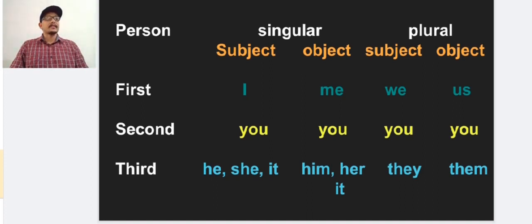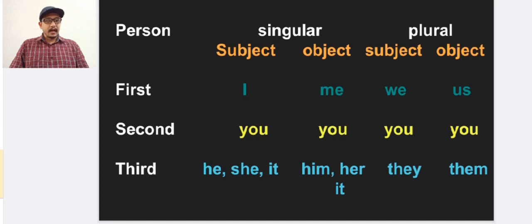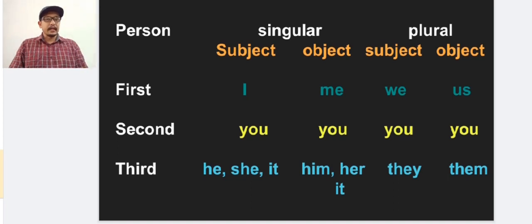Here we are going to study some subject pronouns and object pronouns in personal pronouns. In the first person, singular subject is 'I' and singular object is 'me'; plural subject is 'we' and plural object is 'us'. In the second person, singular subject is 'you', singular object is 'you', plural subject is 'you', and plural object is 'you' — in the second person we use only one word. In the third person, singular subject is 'he', 'she', 'it'; singular object is 'him', 'her', 'it'; plural subject is 'they' and plural object is 'them'.